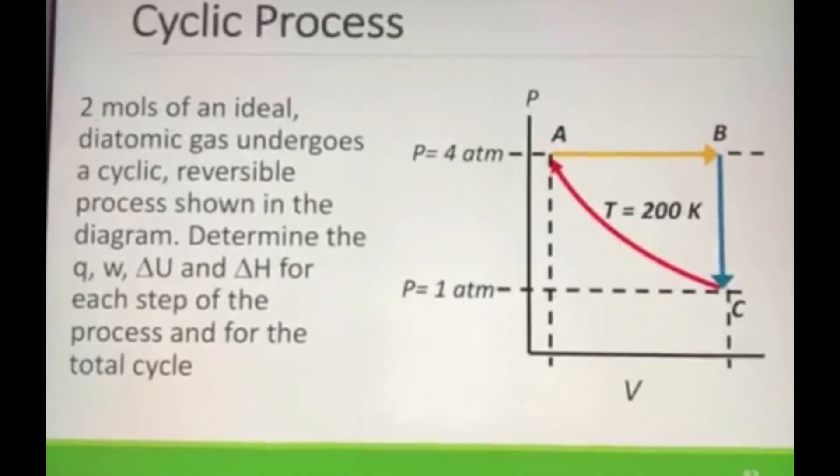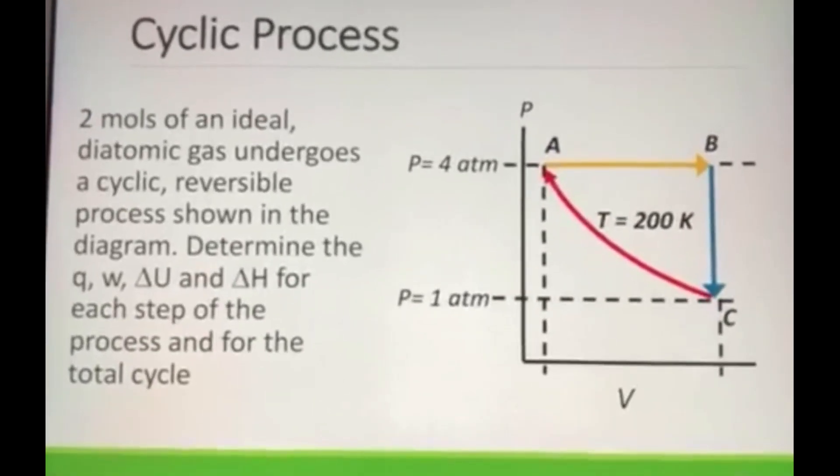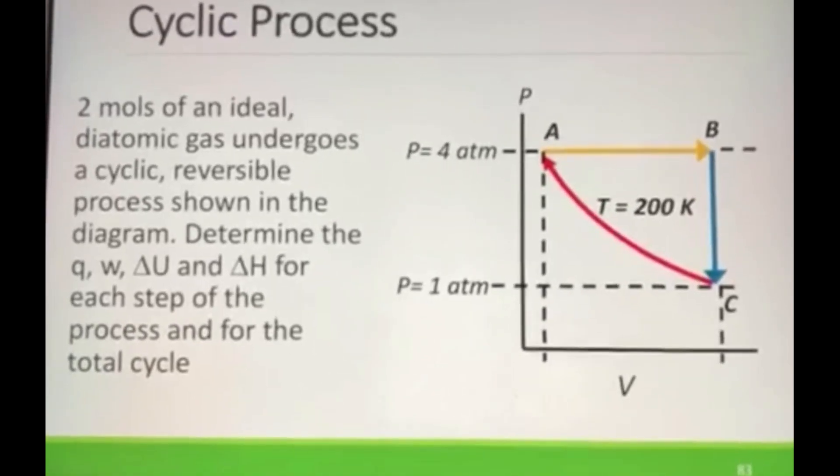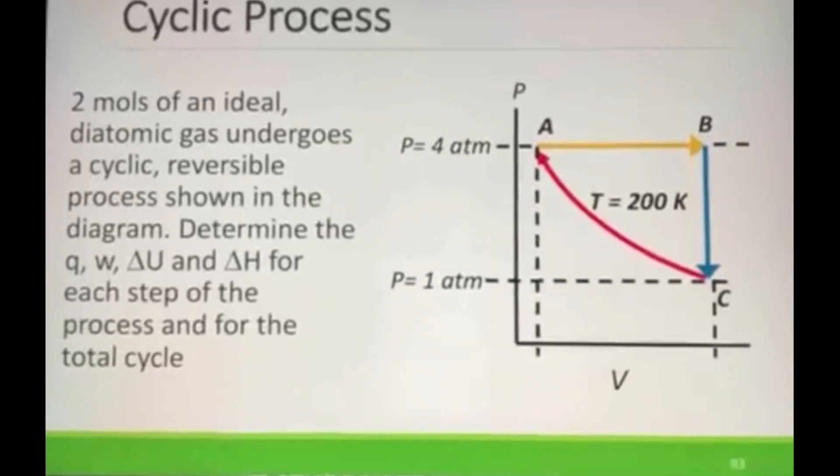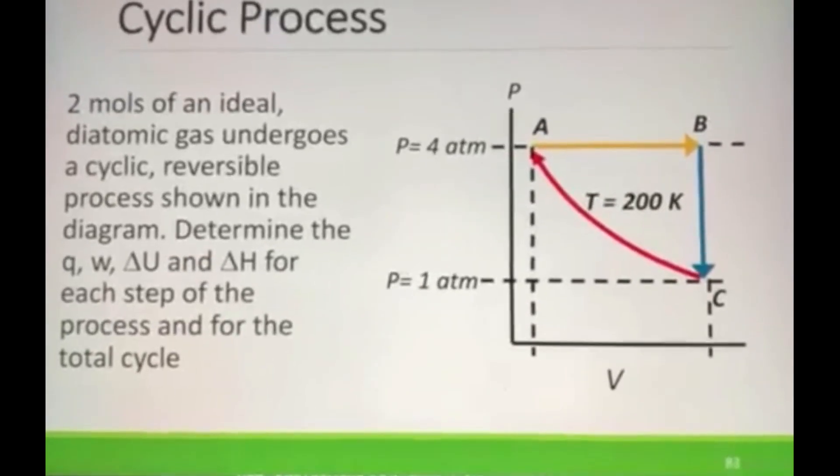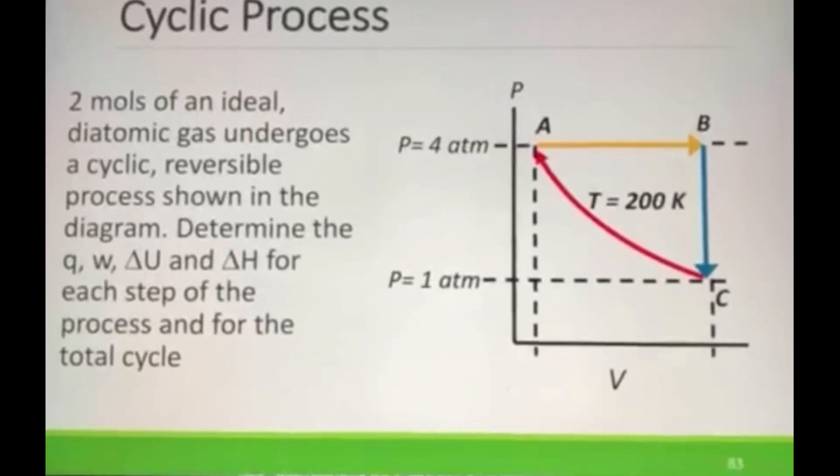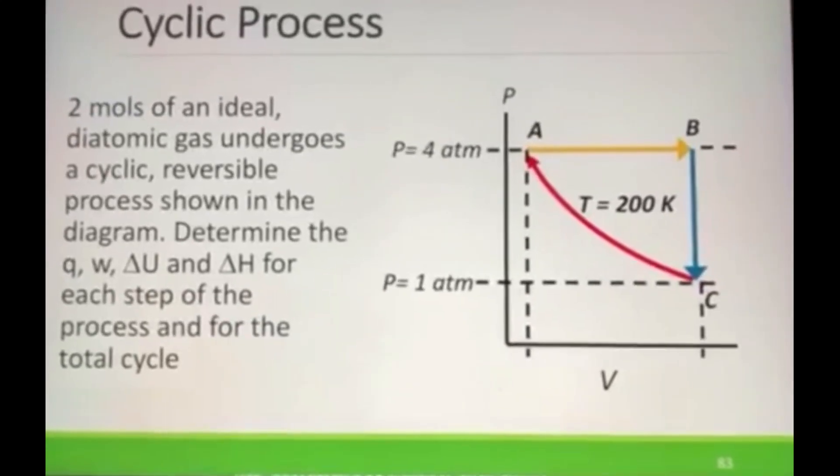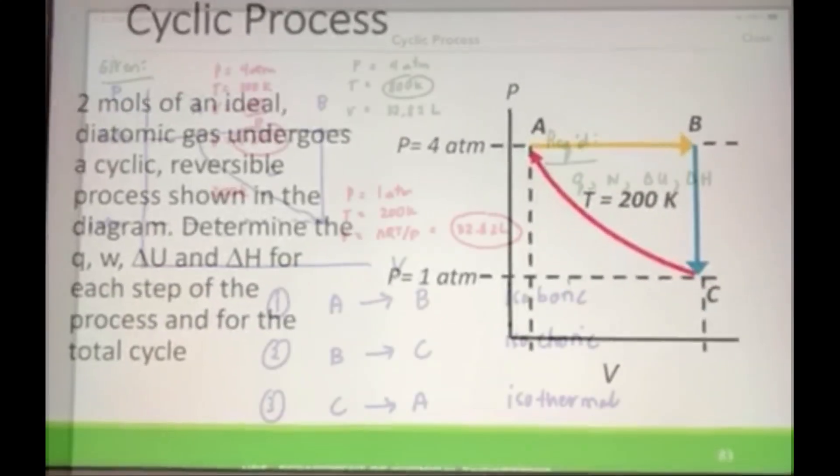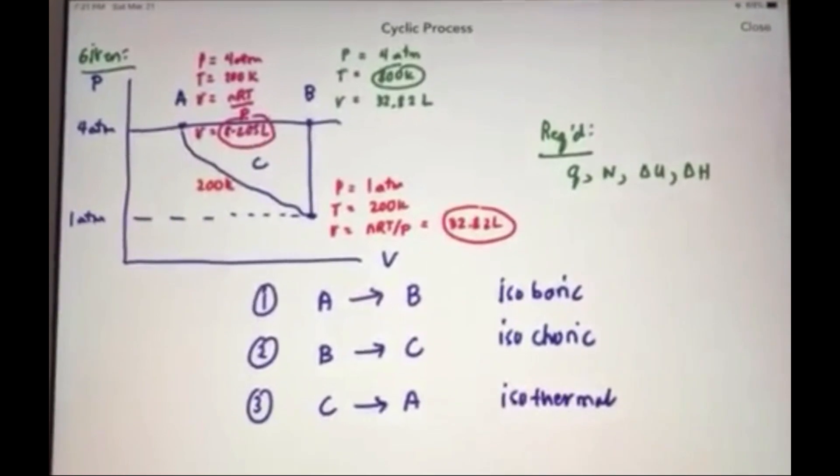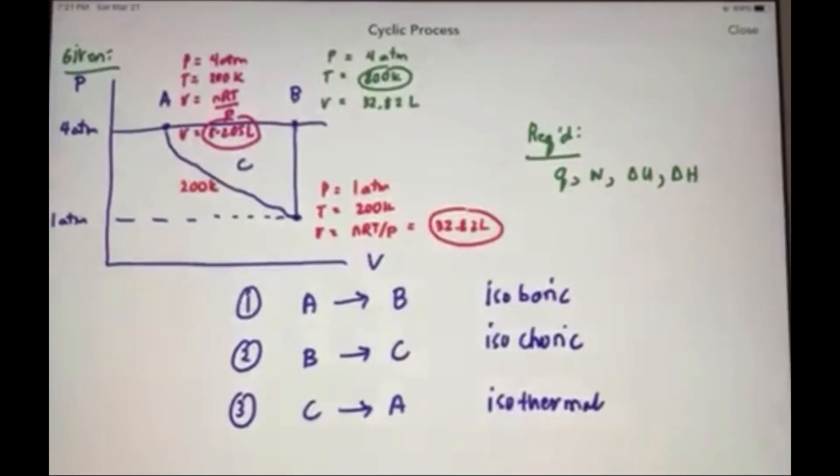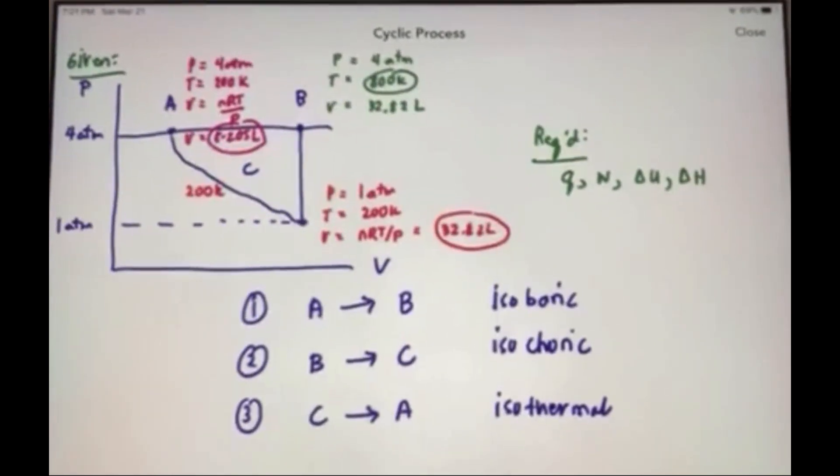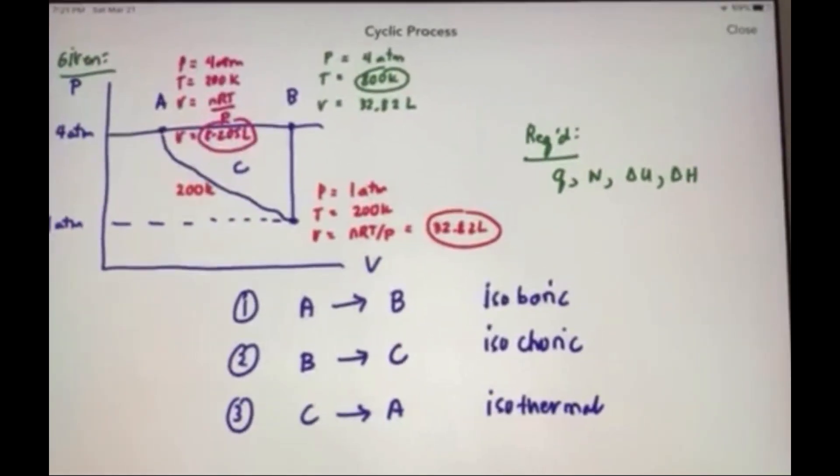In this problem, two moles of an ideal diatomic gas undergoes a cyclic reversible process shown in the diagram. Determine the q, w, delta u, and delta h for each step of the process and of the cycle. So in this problem, we have three steps from steps a to b, b to c, and c to a.